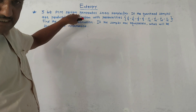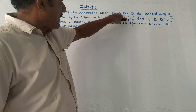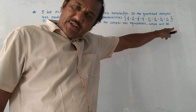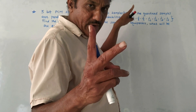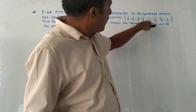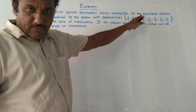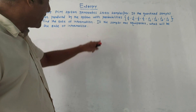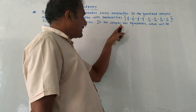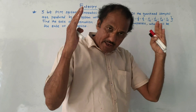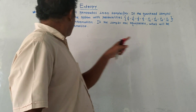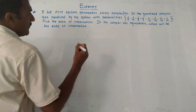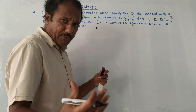Next problem: a 3-bit PCM system generates 1000 samples per second. The quantized samples have probabilities: two values of 1/4, two values of 1/8, and four values of 1/16 — totalling eight symbols. Find the rate of information. Applying the entropy formula: H = 2×(1/4)log₂(4) + 2×(1/8)log₂(8) + 4×(1/16)log₂(16).